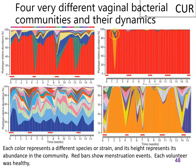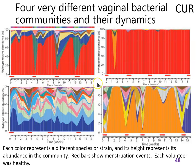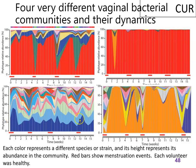In the second woman, one species dominated her entire community at all but one point, and that change didn't seem to have been driven by the menstrual cycle at all. A third woman had a very diverse community the whole time — you could count a higher number of different bacterial species, each present in roughly equal amounts.